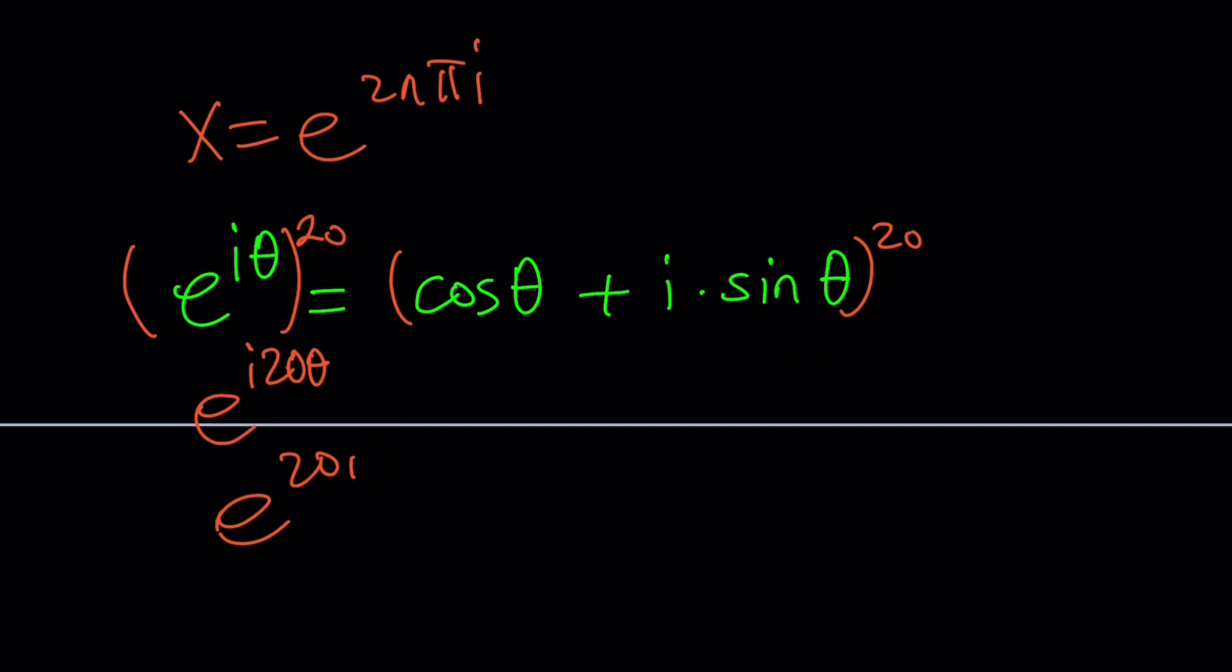However you want to write it. It doesn't matter. But notice that if you try to expand this using the binomial theorem, you're going to have 21 terms. So that's going to be super duper messy. But with the exponential form or the polar form, things are a lot easier. Make sense? So hopefully we can take advantage of this formula.